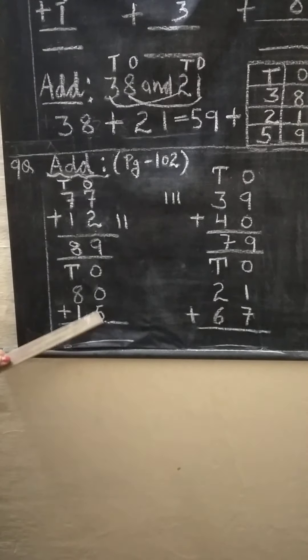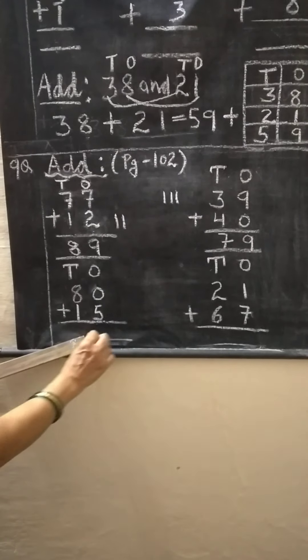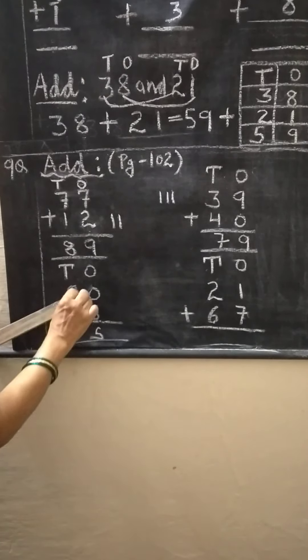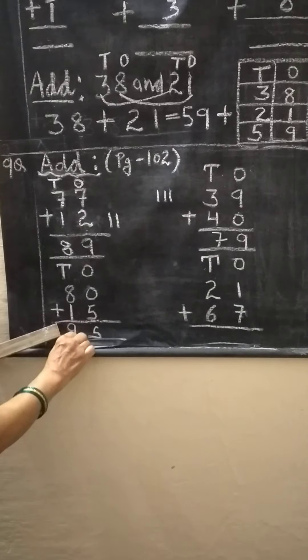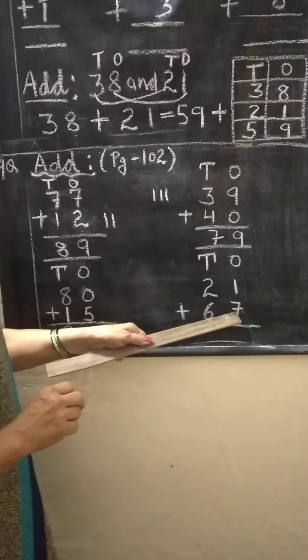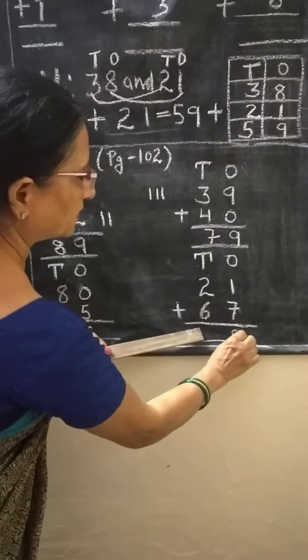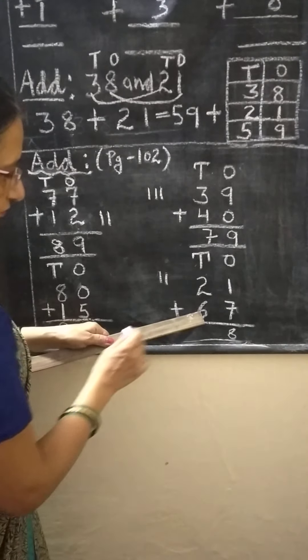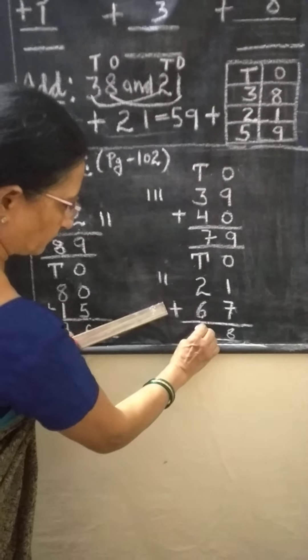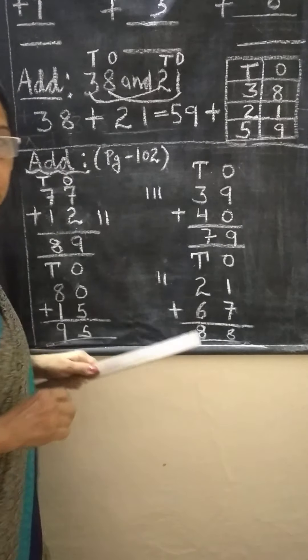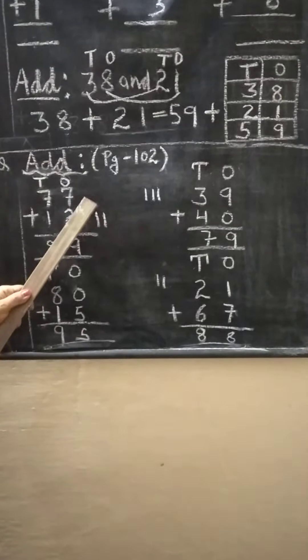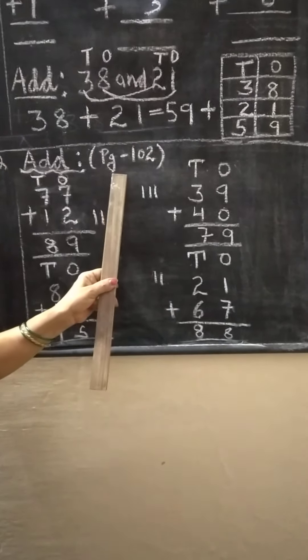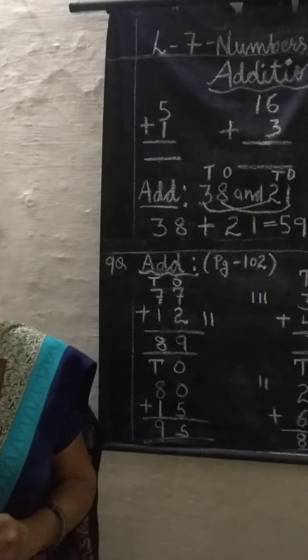Now add more problems. 0 plus 5 is 5. 8 plus 1 is 9. 7 plus 1 is 8. And here 6 plus 2, one, two, after 6 is 7, 8. Okay, understood. Now you practice these sums of addition on page number 102.